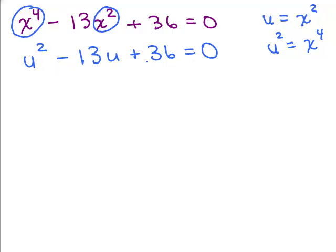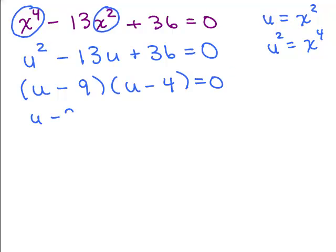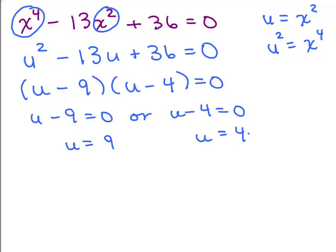Now how do we solve this? When you have a quadratic equation, first check if it factors, since that's the easiest method. And it does factor: (u minus 9)(u minus 4) equals 0. Setting each factor equal to zero gives two solutions for u.